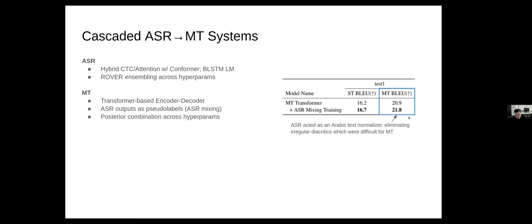What we think is happening here is that the ASR outputs are acting as a text normalizer, which seems to be important in this dataset, where there's actually some irregularities in the diacritics of the Tunisian Arabic data. These diacritics seem to have been more difficult for the MT task, and we think that this is one reason that the MT BLEU is actually improved from ASR mixing as well.